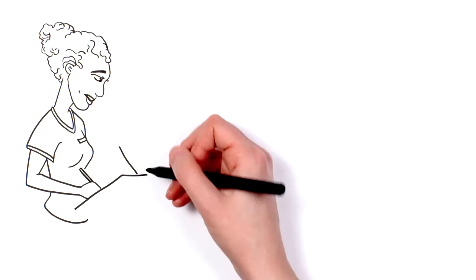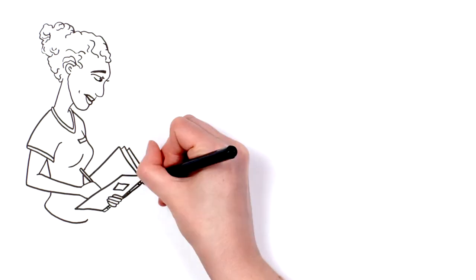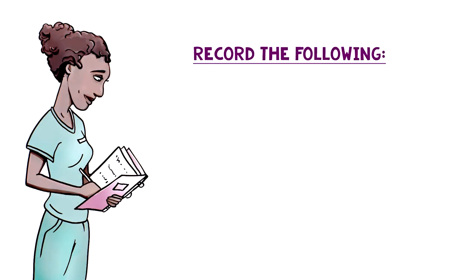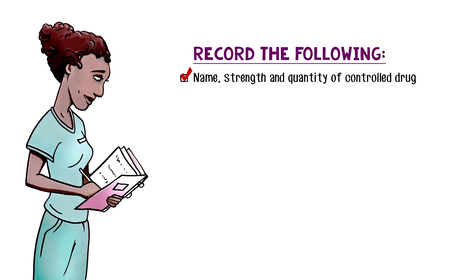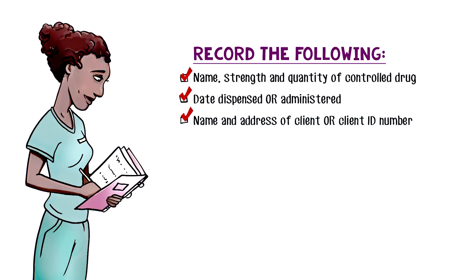When a veterinarian dispenses or administers a controlled drug, they must record this in the controlled drug log. The name, strength and quantity of the controlled drug, the date the controlled drug is dispensed or administered, the name and address of the client, and the quantity of the controlled drug remaining in the inventory must be entered.